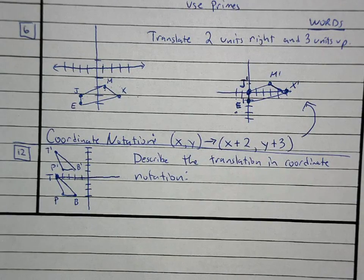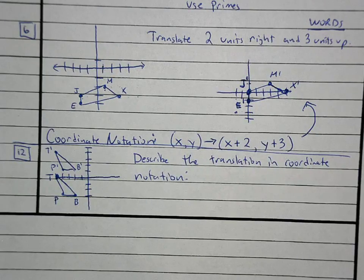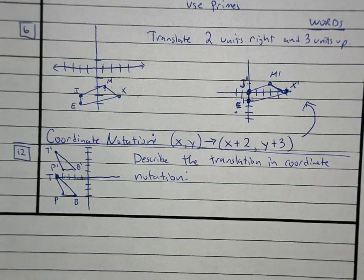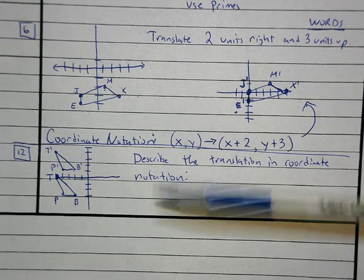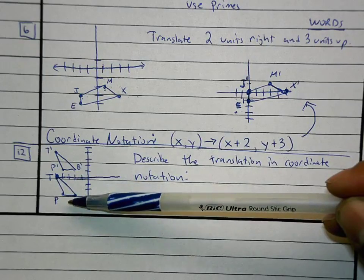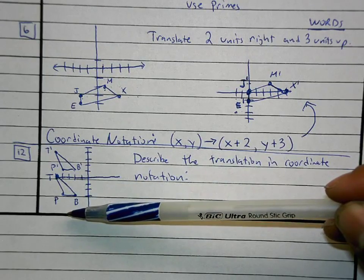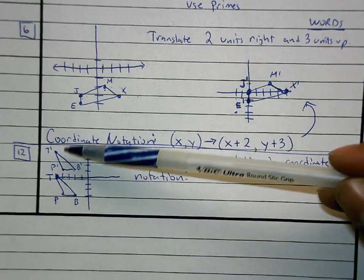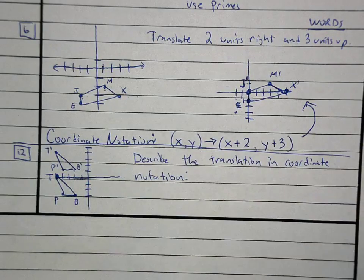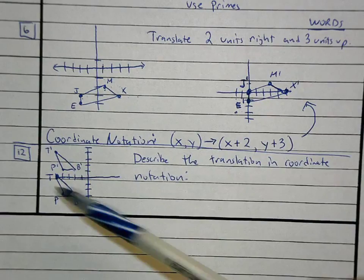The hardest part for some of you is knowing which one is your original object and which one is the moved object. The original object — the pre-image — is T, P, B (not T-prime, P-prime, B-prime). We're starting at the original and ending at the image. If you're unsure, you can write 'start' and 'end' to keep track.